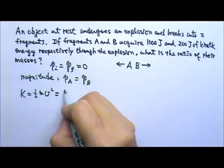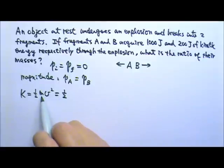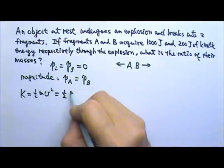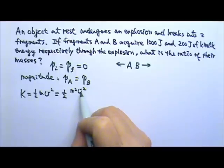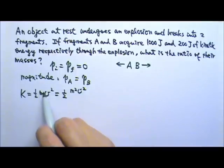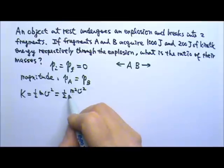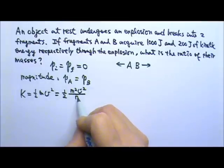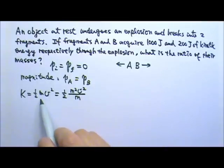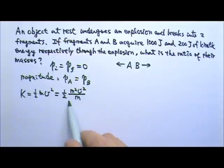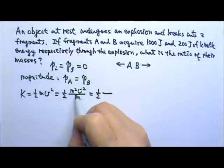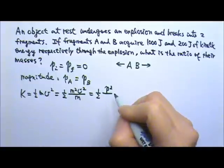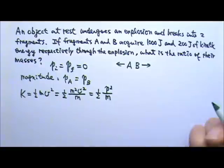I'm going to pair up m and v to get momentum. So I'll make this m²v², which gives momentum squared. But I can't just make this m² for no reason—I have to divide by m so the two sides are equal. Now I can write this as K = ½p²/m.